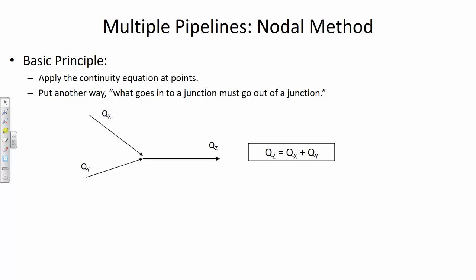Remember the continuity equation from chapter five of fluid mechanics. If we have three pipes with flow coming together at some junction — or node — what goes in must go out, as long as there is no place for storage within that junction. If we draw a control surface around a point where three pipes come together, the combination of flow in and flow out has to be equal. If there is a tank, flow in doesn't have to equal flow out because you could have a gain or loss in storage. Here we're looking at a sealed node where the flow through the single receiving pipe is the sum of each individual flow.